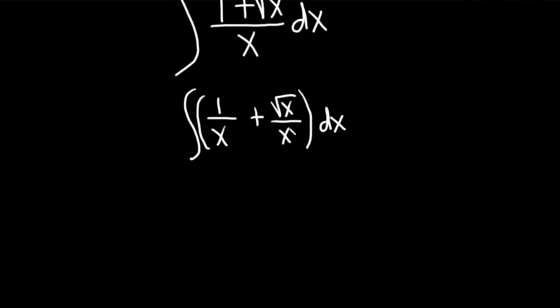Now to clean this up, we need to deal with this second term because 1 over x will integrate to the natural log of the absolute value of x. To simplify this term, we'll write the square root of x as x to the one-half. This is the integral of 1 over x plus x to the one-half over x, and then we have our dx.